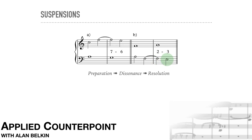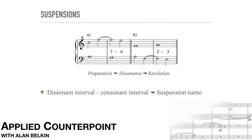Here the suspension is in the lower part. The numbers between the parts are the suspension's names: first the dissonant interval, then the consonant resolution. So the first example is a 7-6 suspension, and the second is a 2-3.